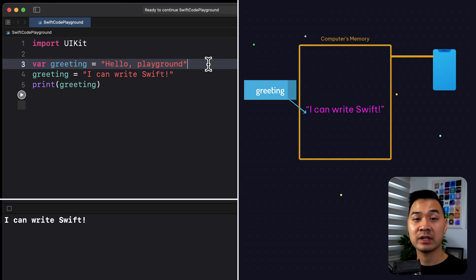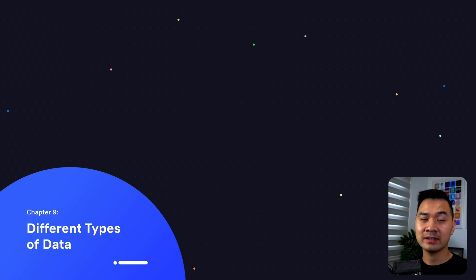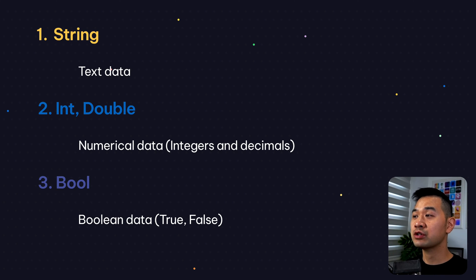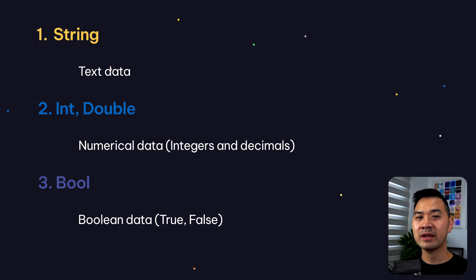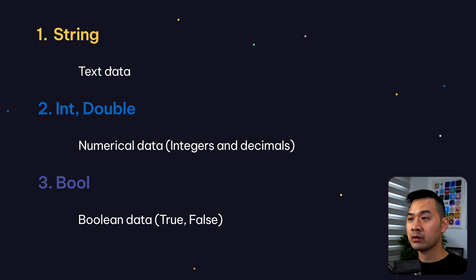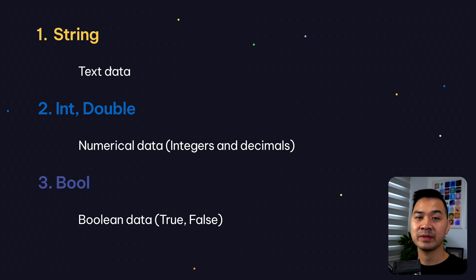What happens to the first piece of text data 'Hello, playground'? The computer will detect that nothing else needs that piece of data and will clear it out from memory. Now, there are different types of data you can work with. Here are the most common basic data types. First, the String data type — this is what we've been working with, it's text data. Think of it as a string of characters — this is the terminology for text data across most programming languages. Next, Int represents integer data — whole numbers including negatives. Doubles are decimal or fractional numbers. Boolean, or Bool for short, represents true/false — useful when there are only two options, like a light switch on or off.